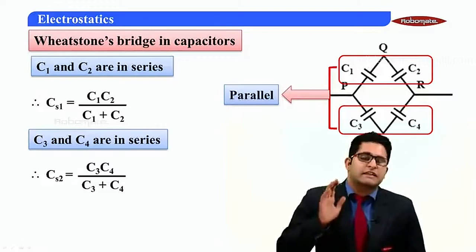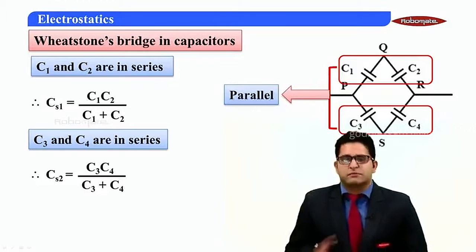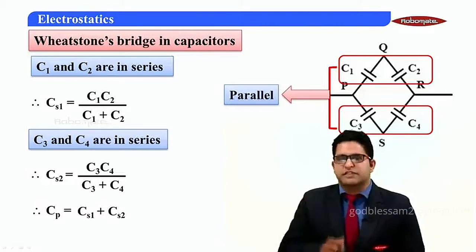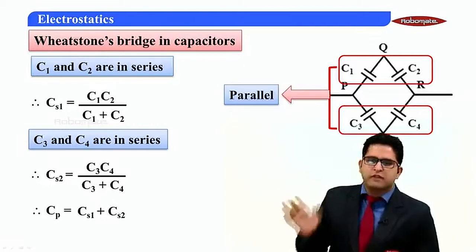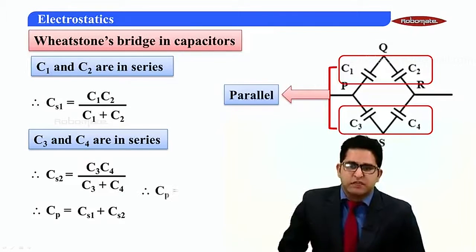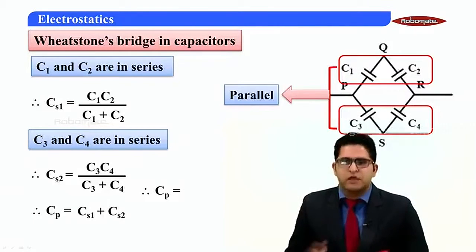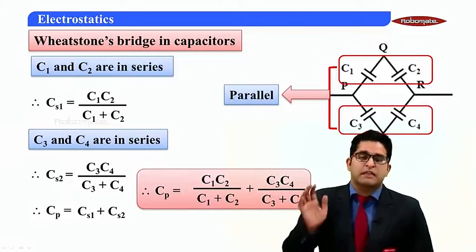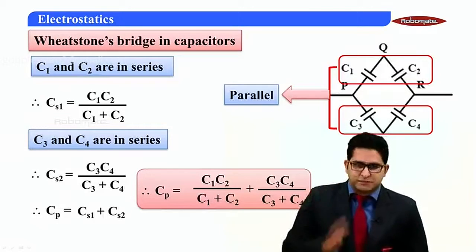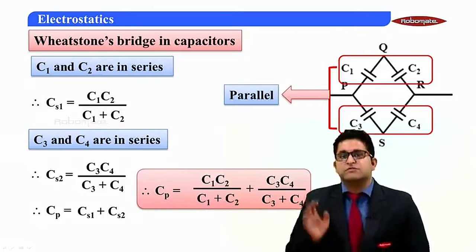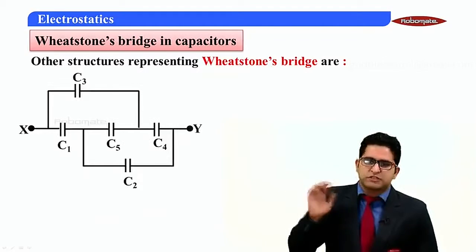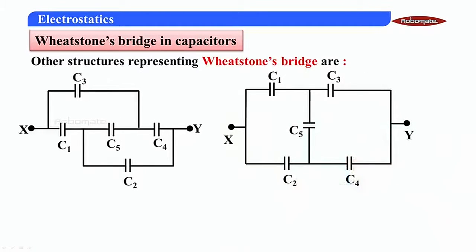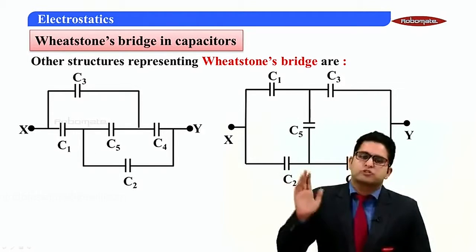These two sections are connected in parallel, so the effective capacity Cp = CS1 + CS2 = C1·C2/(C1+C2) + C3·C4/(C3+C4). This is the effective capacity of the bridge when it is balanced. Other structures also representing Wheatstone Bridge exist, and the balancing condition is applicable to those structures as well.